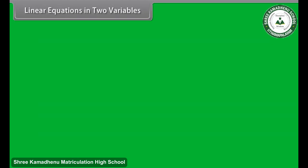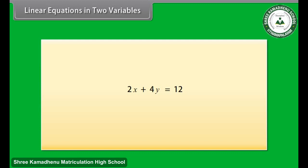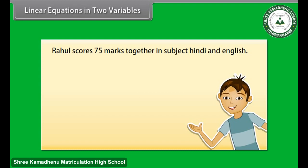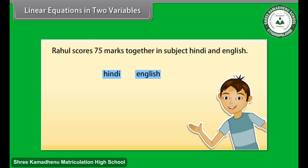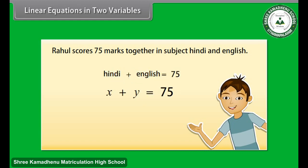A linear equation can have more than one variable. Here we will study linear equations in two variables. For example, Rahul scores 75 marks together in subjects Hindi and English. The marks of neither subject are known — there are two unknown quantities. Let us use X and Y to denote them. So the marks scored in Hindi is X and the marks scored in English is Y. Therefore, X plus Y is equal to 75 is the required equation. This is an example of a linear equation in two variables.